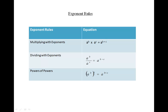The exponent rules are as follows. Exponent rules: multiplying with exponents. When you're multiplying with exponents with the same base, add the exponents. Keep the base the same. So the equation looks like this: A to the B times A to the C equals A to the B plus C.